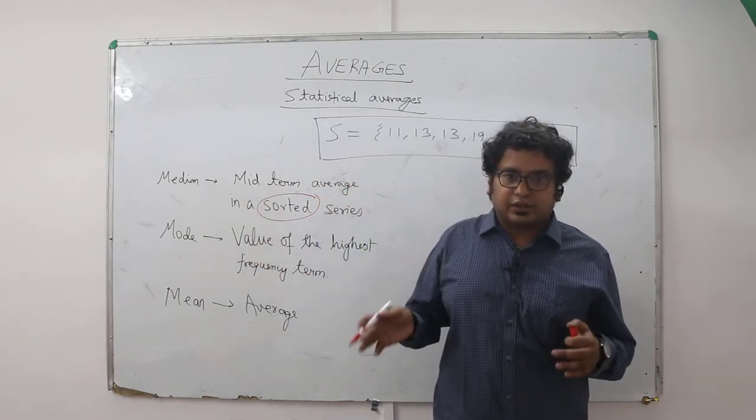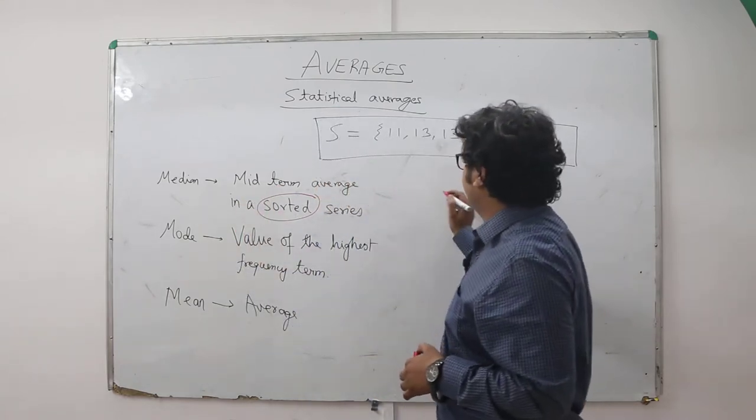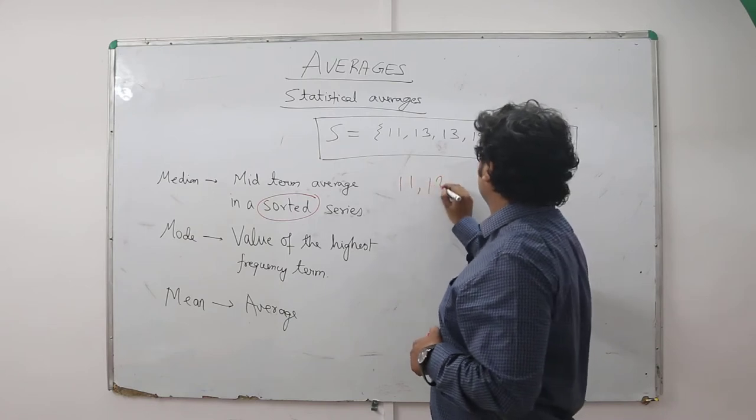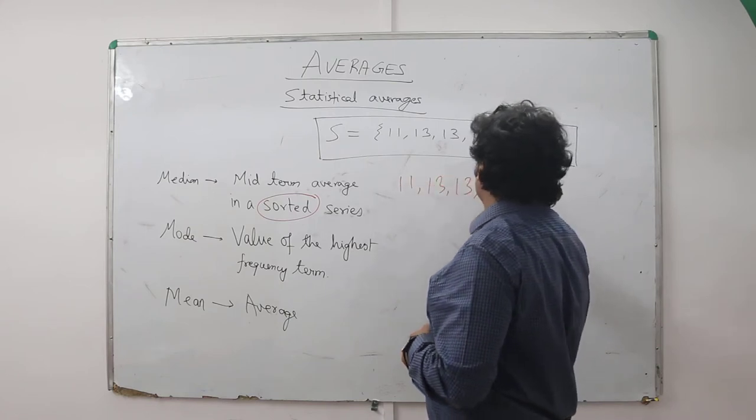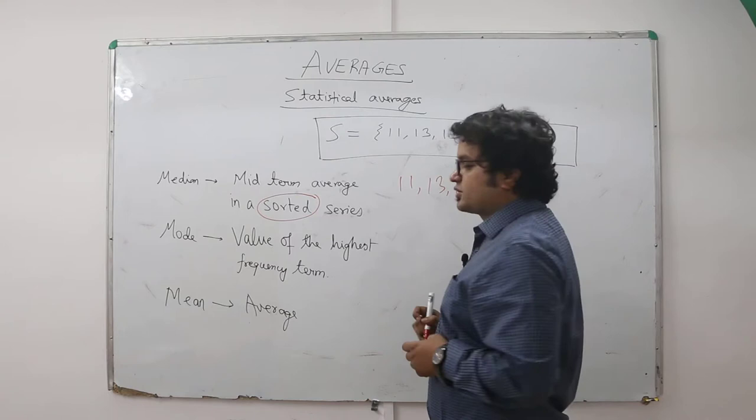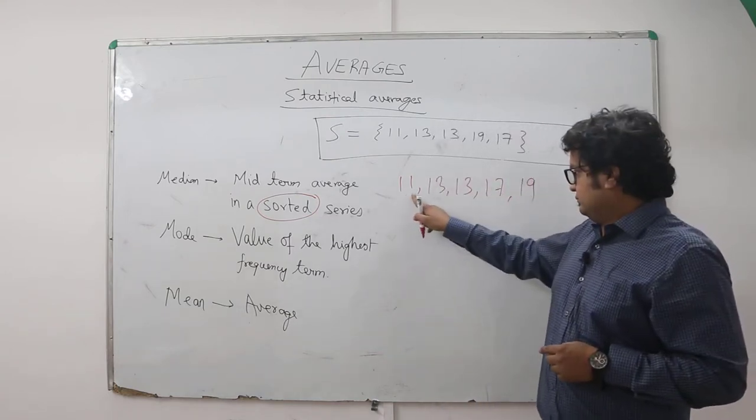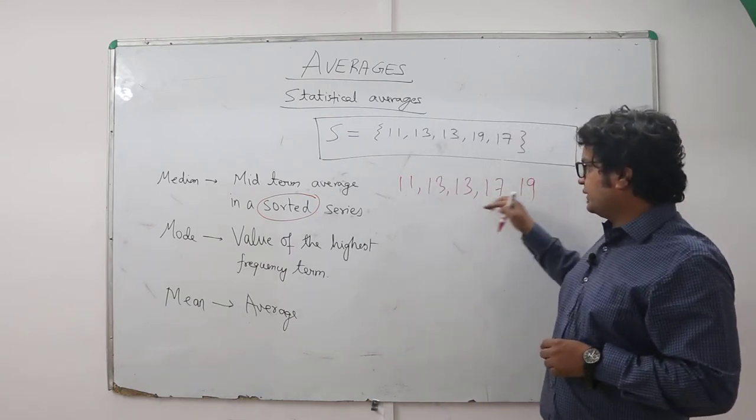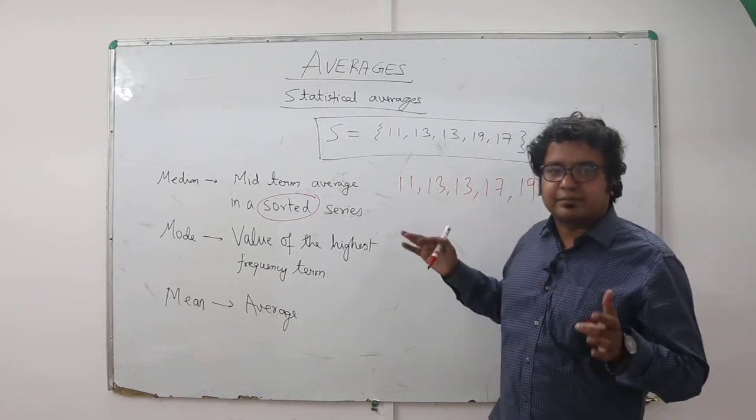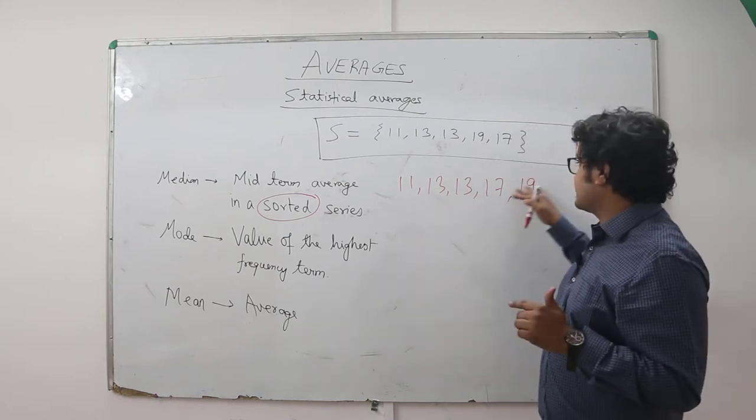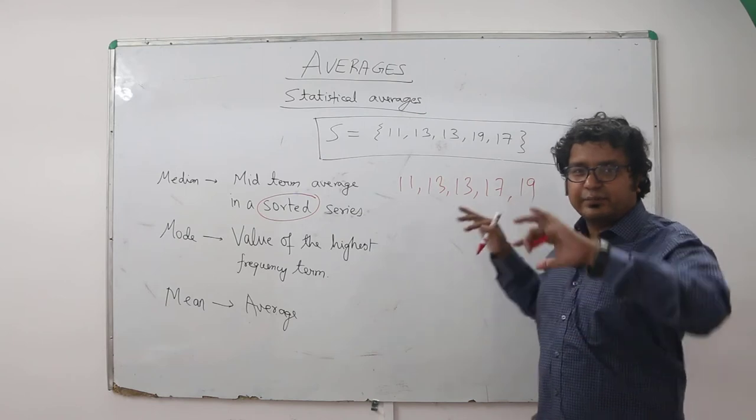Let's do that first: 11, 13, 13, 17, 19. Now this is a sorted series. Since there are five terms, you don't need to find the midterm average—you have a single midterm. If the number of terms was six, there would have been two left, two right.